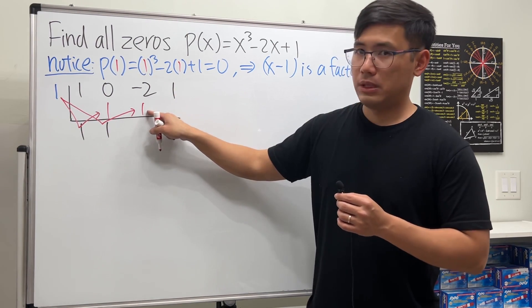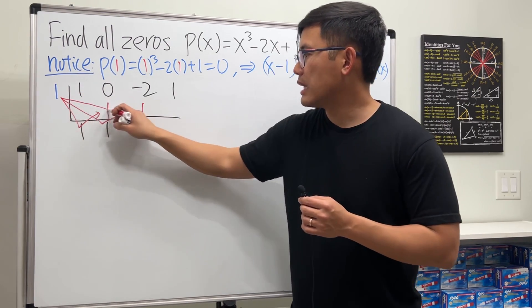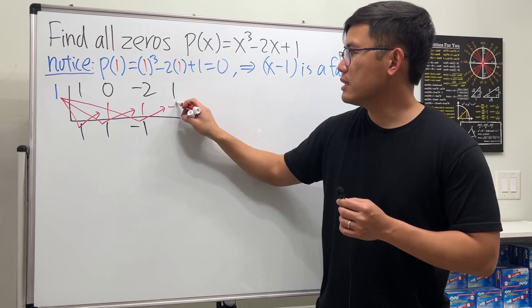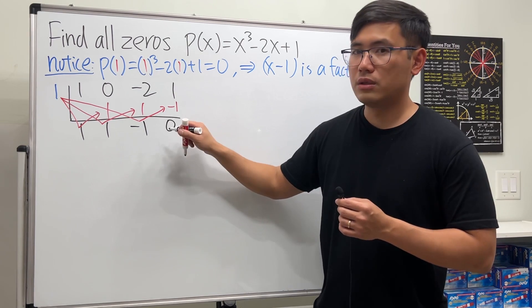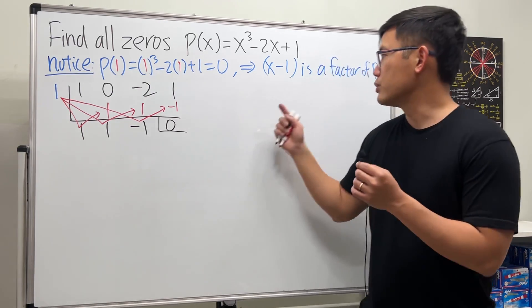Negative two plus one is negative one. Lastly, take this times that and we put it here: it's negative one, and we end up with zero. The very last number here is the remainder; it has to be zero because we know this is a factor.